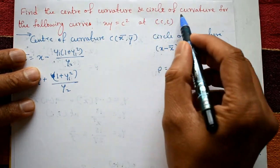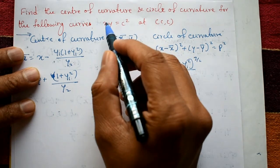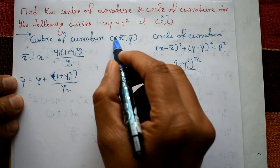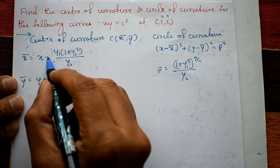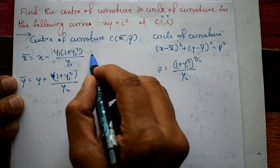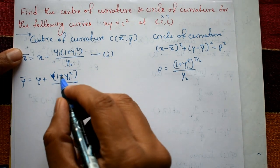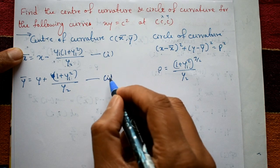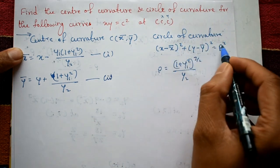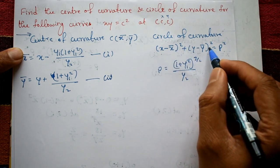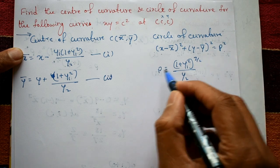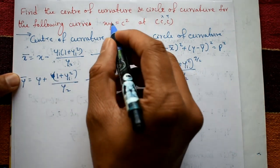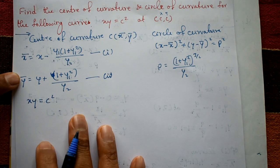Find the center of curvature and circle of curvature for the curve xy = c² at point (c, c). The center of curvature is (x̄, ȳ), where x̄ = x − [y1(1 + y1²)/y2] (equation 1) and ȳ = y + [(1 + y1²)/y2] (equation 2). The circle of curvature is (x − x̄)² + (y − ȳ)² = ρ², where ρ = (1 + y1²)^(3/2) / y2.